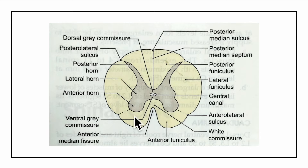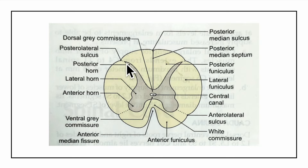Ventral or motor nerve roots emerge from the anterolateral sulcus and carry motor information from the spinal cord to the rest of the body. Dorsal or sensory nerve roots enter the spinal cord from the posterolateral sulcus and carry sensory information from the body to the spinal cord and then to the brain.